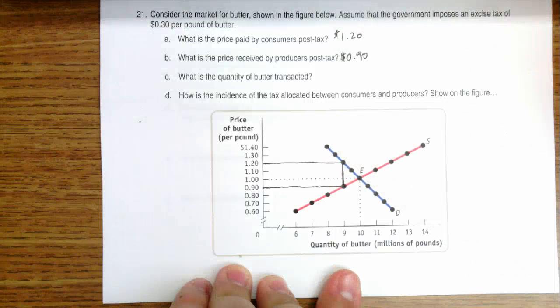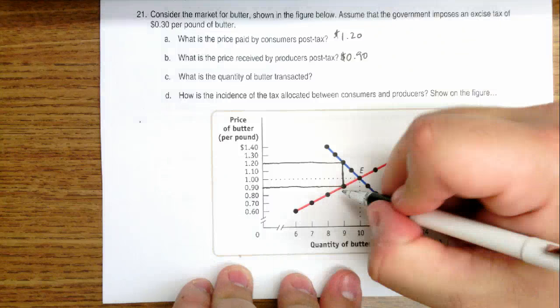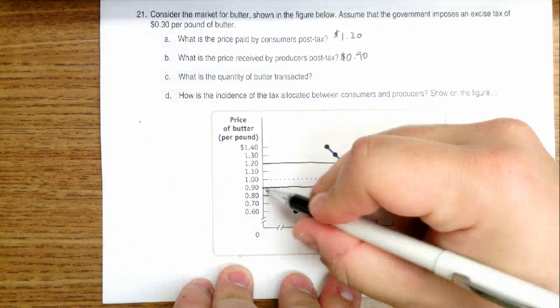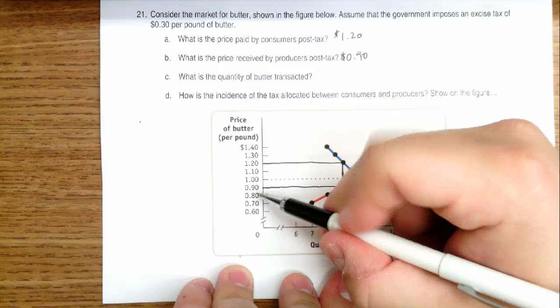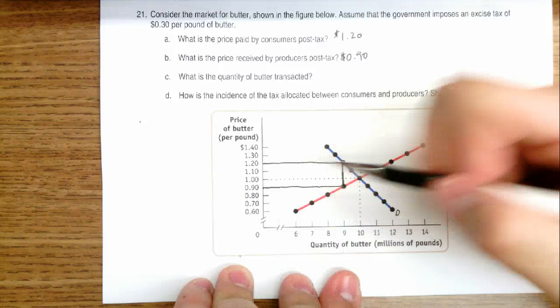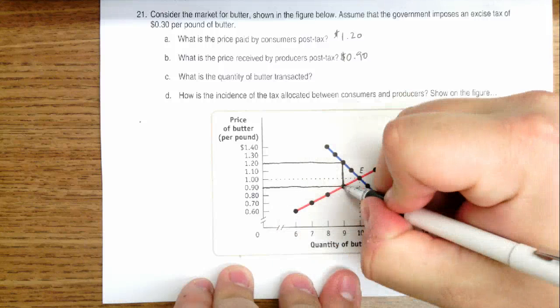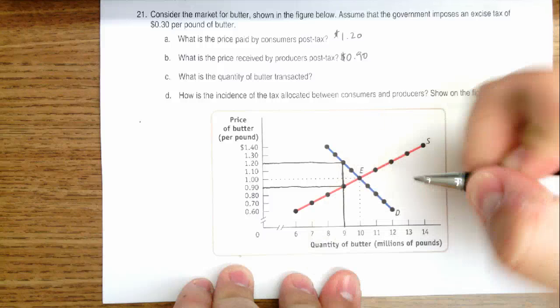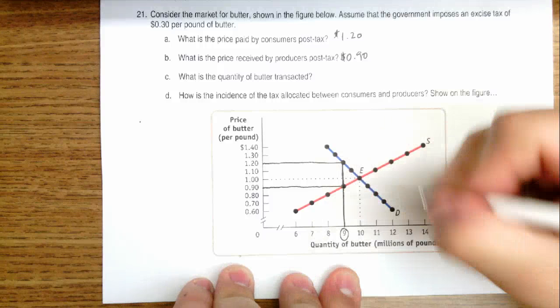How much butter will be transacted? How much will be sold? Well, let's find out. What is the amount of butter that corresponds to a $0.90 supply price and a $1.20 demand price? We just draw the line all the way down until we hit the horizontal axis and we find that it's going to be 9 million pounds of butter.